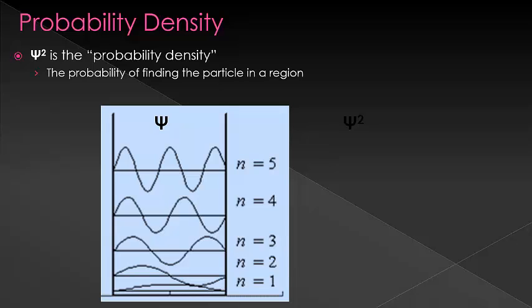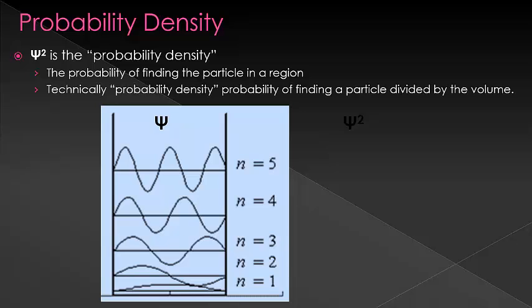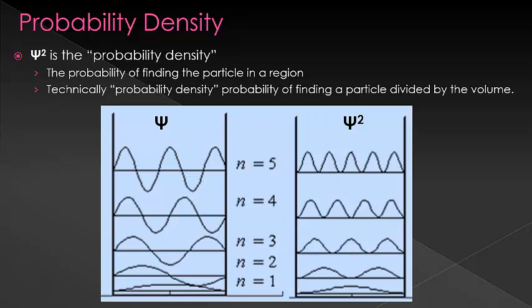It tells us the probability of finding a particle within a given space. Here, I have both the wave functions and the probability densities drawn out for the different energy levels of the particle in the box.